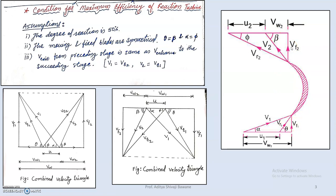Similarly, vf1 equals vf2. This gives us a combined velocity triangle. In some reference books the triangles are drawn upside, in others downside — you can draw either way and get full marks. For the inlet velocity triangle, v1 makes angle alpha1, vr1 makes angle theta, and vf1 is opposite to vr1. The blade velocity u goes from v1 to vr1, and vw1 goes from v1 to vf1.